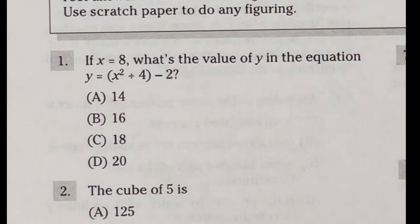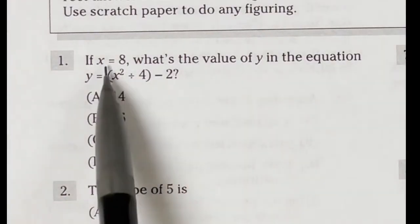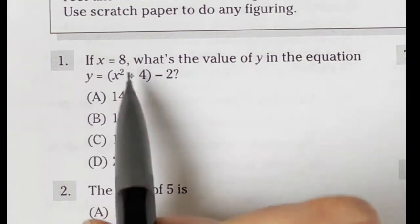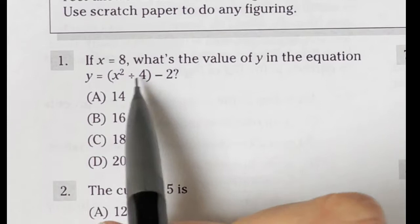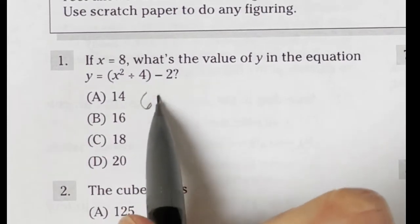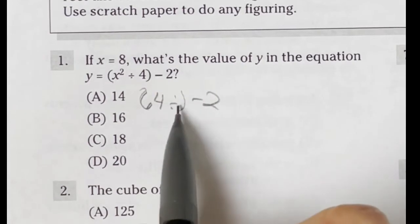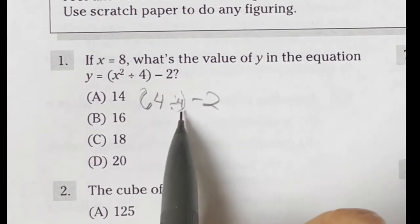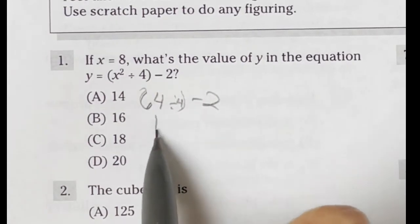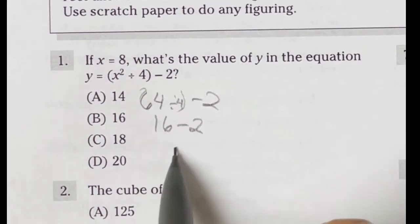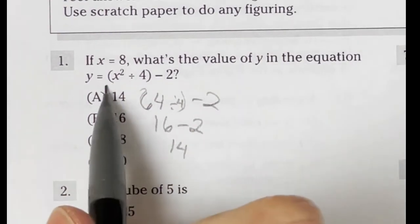Number one on the mathematical knowledge ASVAB test says, if we plug in x equals 8 into this equation, then what is y equal to? So I'm literally just going to plug in the 8 here. So 8 squared is going to give me 64 divided by 4 and then minus 2. So if we do divided by 4, that should end up giving me 16 minus 2. And then we're going to do 16 minus 2, which is going to give me 14. This answer is A.